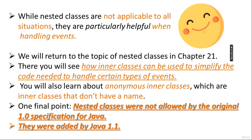While nested classes are not applicable to all situations, they are particularly helpful when handling events. When we cover event handling in Java, you will see how inner classes are important and how they can be used to simplify the code needed to handle certain types of events. You will also learn about anonymous inner classes, which are inner classes that do not have a name. Nested classes were not allowed in Java 1.0; they were added in Java 1.1.